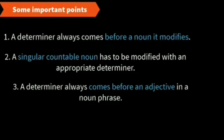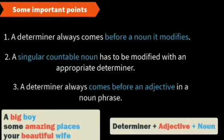A determiner always comes before an adjective in a noun phrase: 'a big boy,' 'some amazing places,' 'your beautiful wife.' Here you have determiner plus adjective plus noun. A determiner always comes before an adjective in a noun phrase.